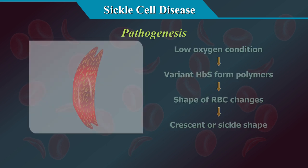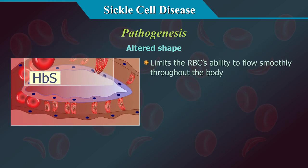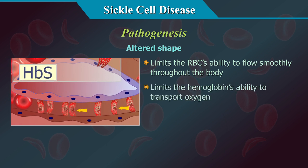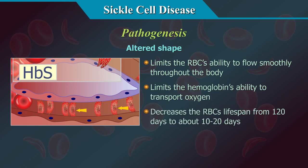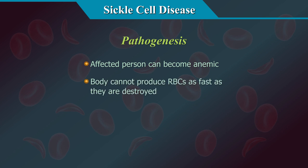This altered shape limits the RBC's ability to flow smoothly throughout the body. It limits the hemoglobin's ability to transport oxygen and decreases the RBC's lifespan from 120 days to about 10–20 days only. The affected person can become anemic because the body cannot produce RBCs as fast as they are being destroyed.